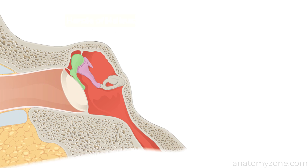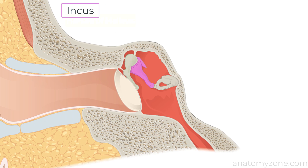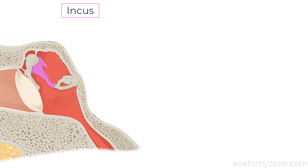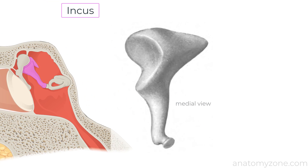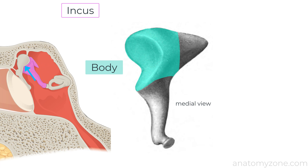The incus is the second bone in the ossicular chain lying between the malleus and the stapes. It's comprised of a body and two limbs. The body articulates with the head of the malleus at the incudomalleolar joint and sits within the epitympanic recess. Here you can see the articular surface of the incus.